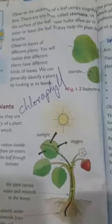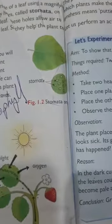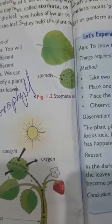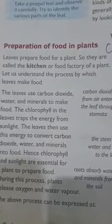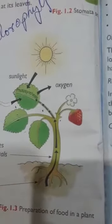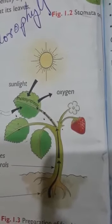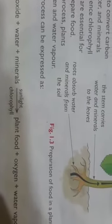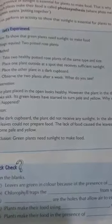Next, we have seen that leaves have small structures — nothing but stomata. These are small holes on the leaves. We also learned how plants prepare their own food using carbon dioxide, water, and minerals from the roots, and sunlight. In the presence of chlorophyll and sunlight, plants prepare their own food and produce food, oxygen, and water vapor. Then we did an experiment on this.